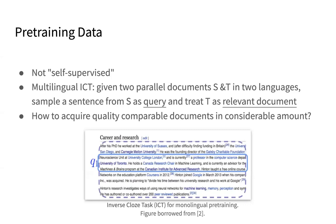Our model is not fully self-supervised because we need to know if a query-document pair in two languages is relevant or not. Inspired by the inverse cloze task for monolingual pre-training, where people select a passage, sample a sentence from it as the query, and use the rest as the relevant document, we propose multilingual ICT. The idea is that given two parallel documents S and T in two languages, we sample a sentence from S as the query and treat T as the relevant document.